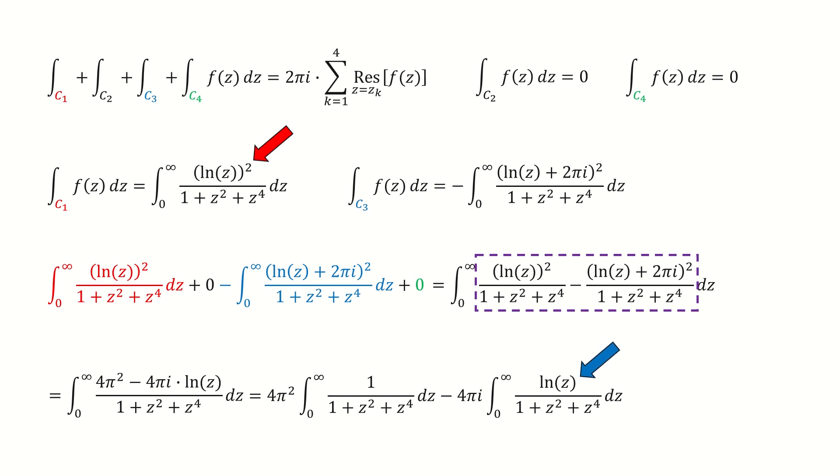But if we define the function f as the log z in the numerator, then after this subtraction step, which is highlighted in the purple box, then this log z term will cancel out. In that case, we cannot proceed anymore. That's why in the very beginning, we defined the function f as the log z square in the numerator. And then we put the right hand side here. And next, we will calculate the residues.